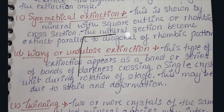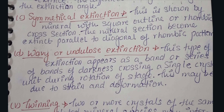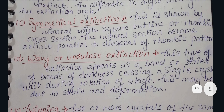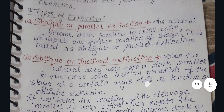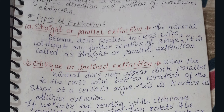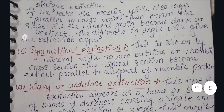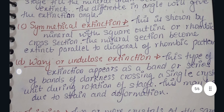For example, imagine a square-shaped mineral where everything is uniform and all sides are equal. When you rotate the stage across the diagonal of that square, it will show the extinction property. So in summary: the first type shows extinction parallel to the cross wire, the second type requires rotation to an angle, and the third type shows extinction along the diagonal.